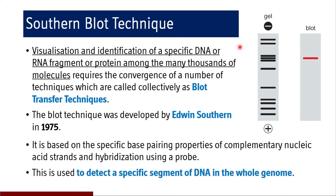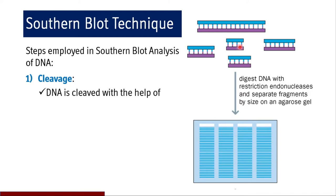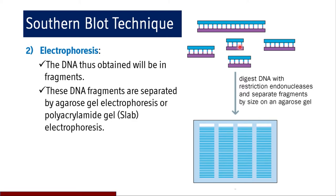Southern blotting is used to detect a specific segment of DNA in the whole genome — it identifies a complementary sequence and binds to it, which is called hybridization. The steps employed are: first, cleavage — the DNA is cleaved with the help of restriction endonucleases at specific sites. Then electrophoresis — all the digested fragments are run and separated by agarose gel electrophoresis or polyacrylamide gel electrophoresis.